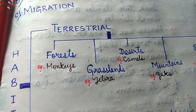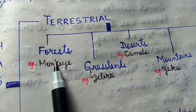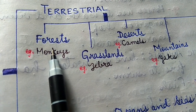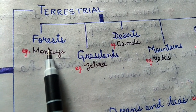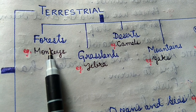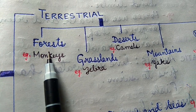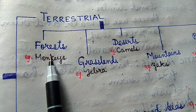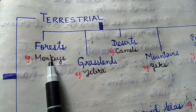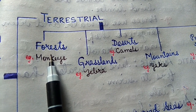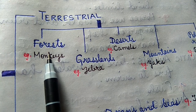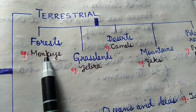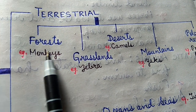Let's start with the terrestrial habitat. The first one is forest. A forest is a large area where there are different kinds of plants growing together. In a forest there are lots of trees and most of them are very big and dense. Animals such as monkeys and rabbits live in forests. Forests are also home to many birds and insects.